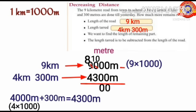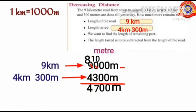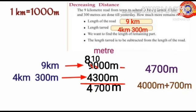Ten minus 3 is 7, and 8 minus 4 is 4, giving us 4700 meters. Next, convert 4700 meters into kilometers and meters. Split 4700 meters as 4000 meters plus 700 meters. We know that one thousand meters make one kilometer, so 4000 meters make 4 kilometers, with 700 meters remaining.